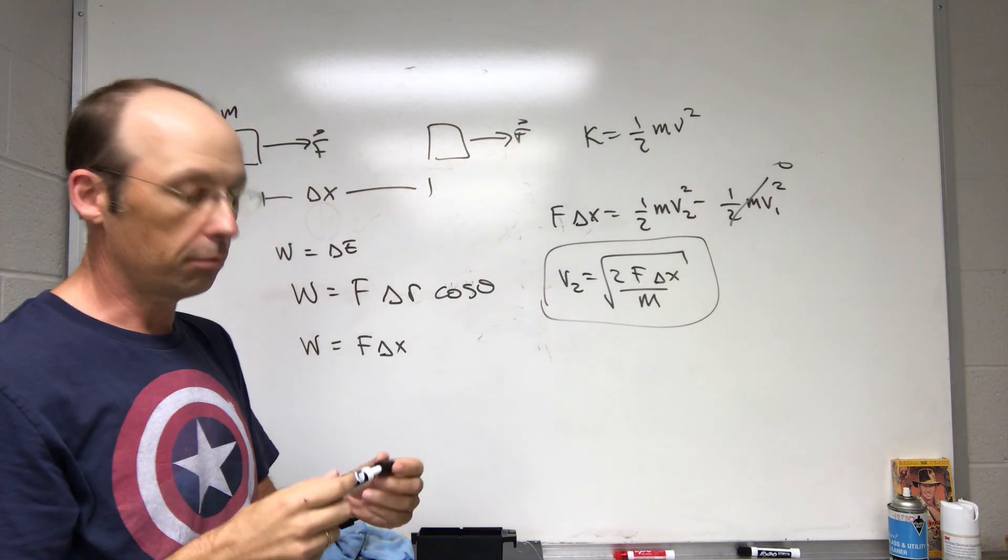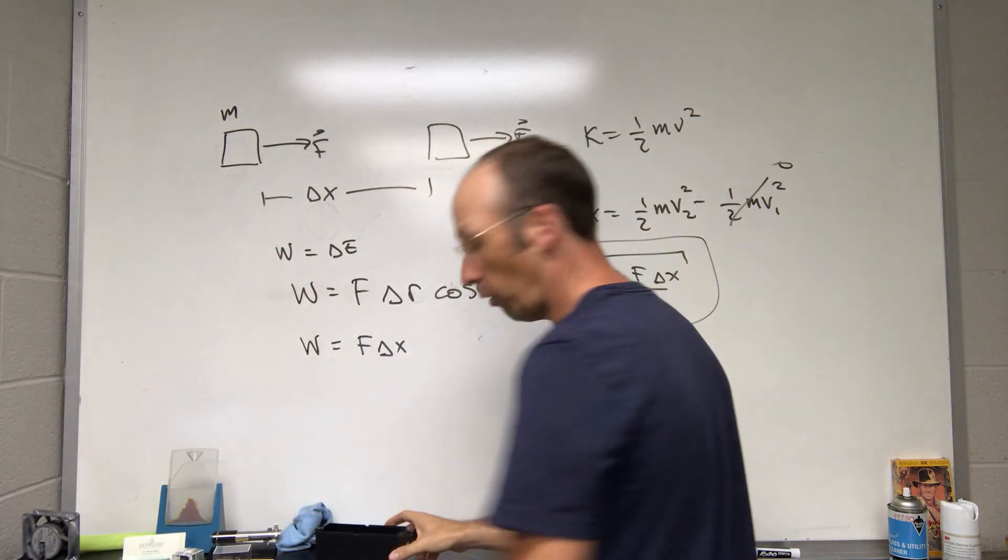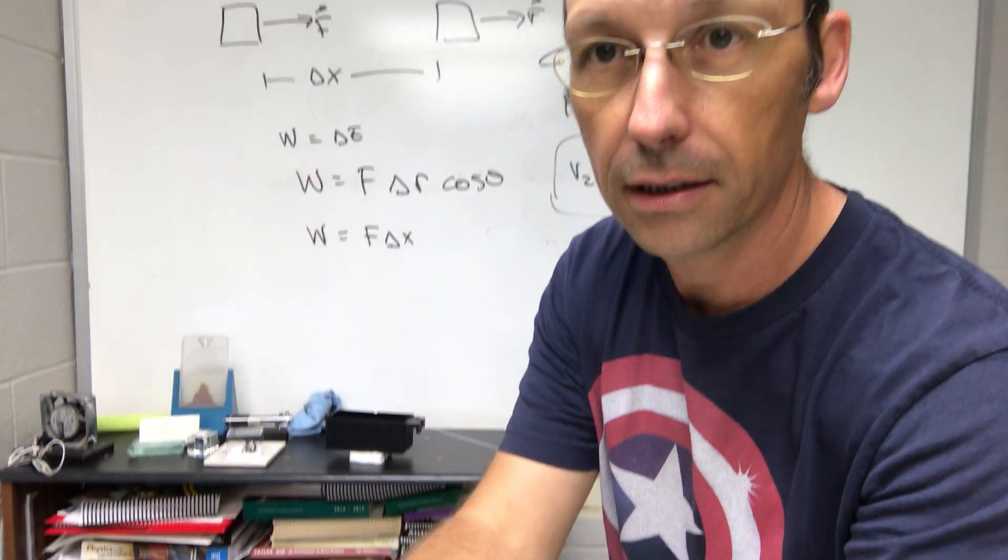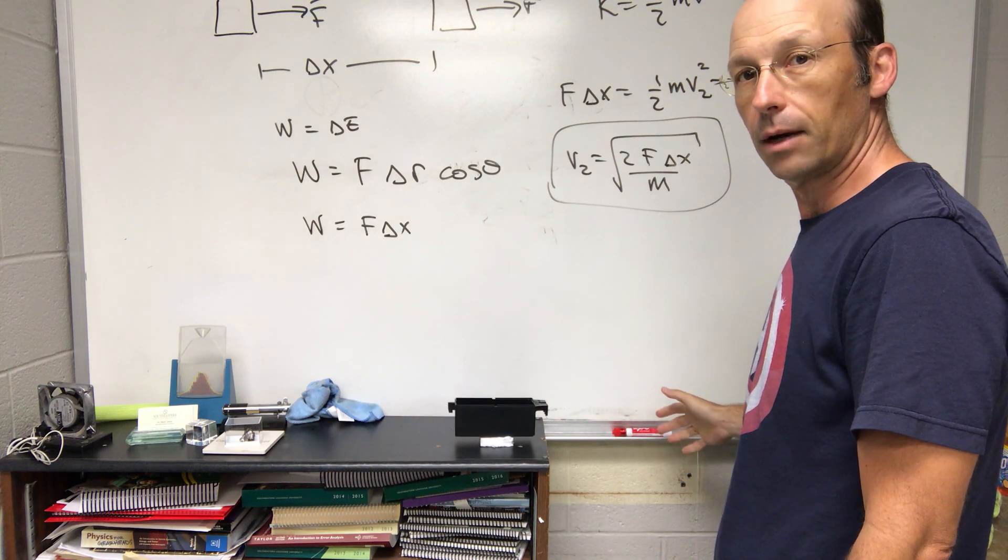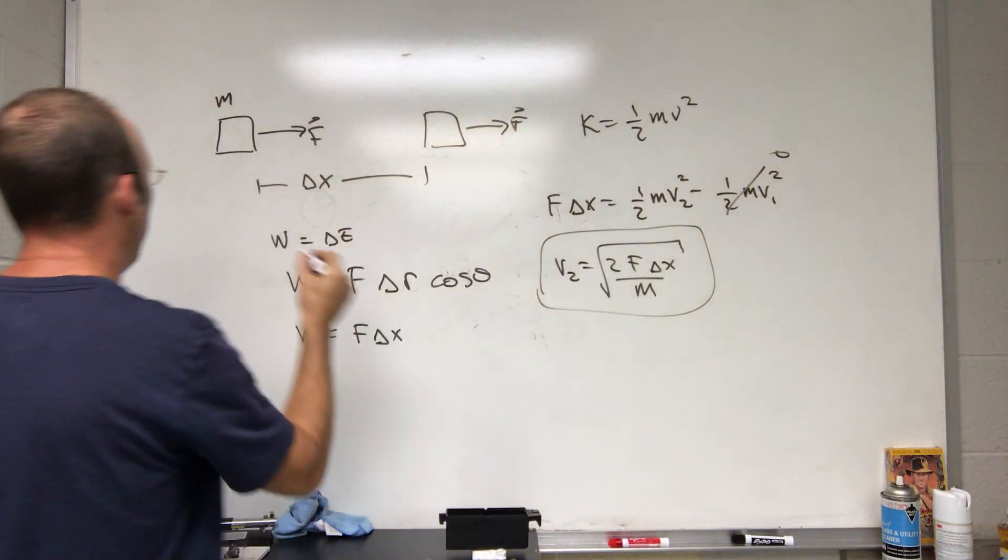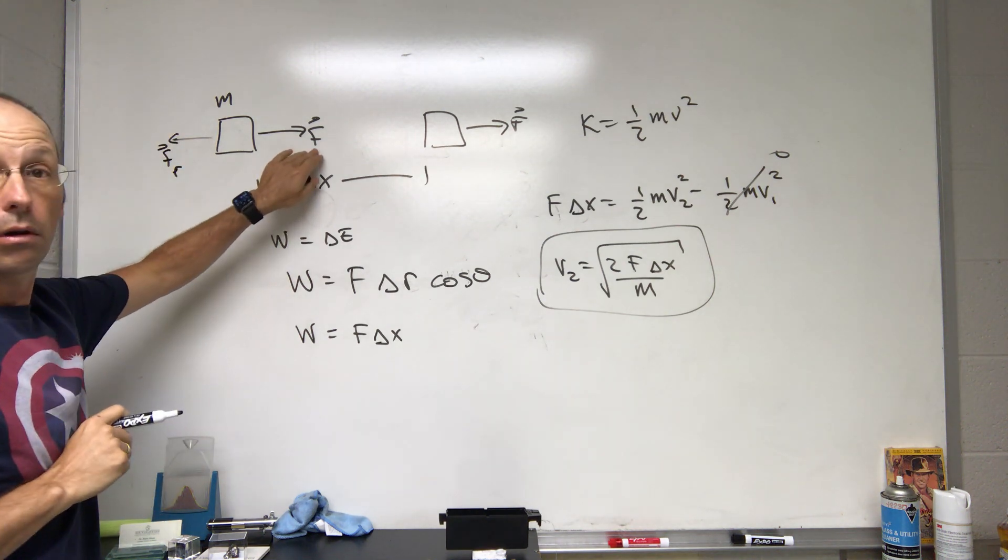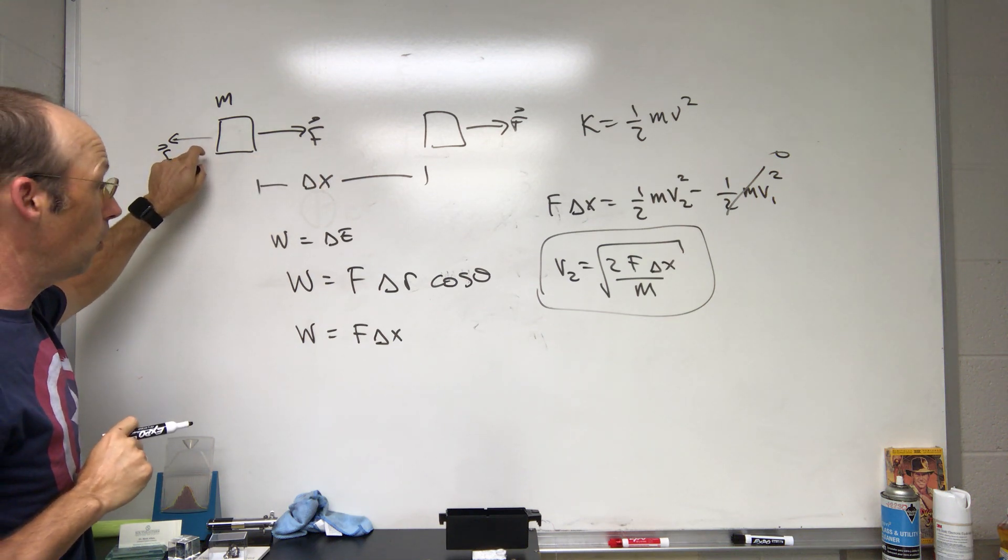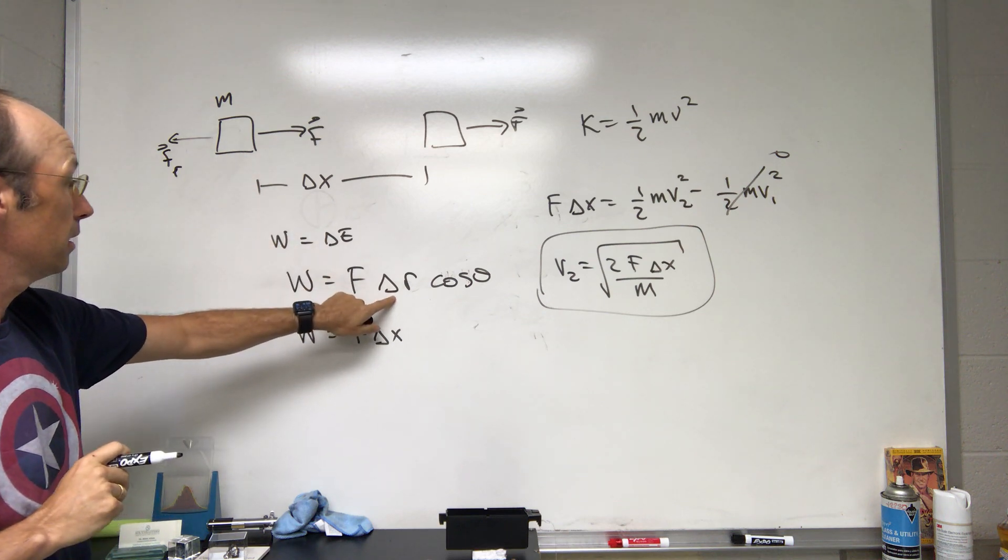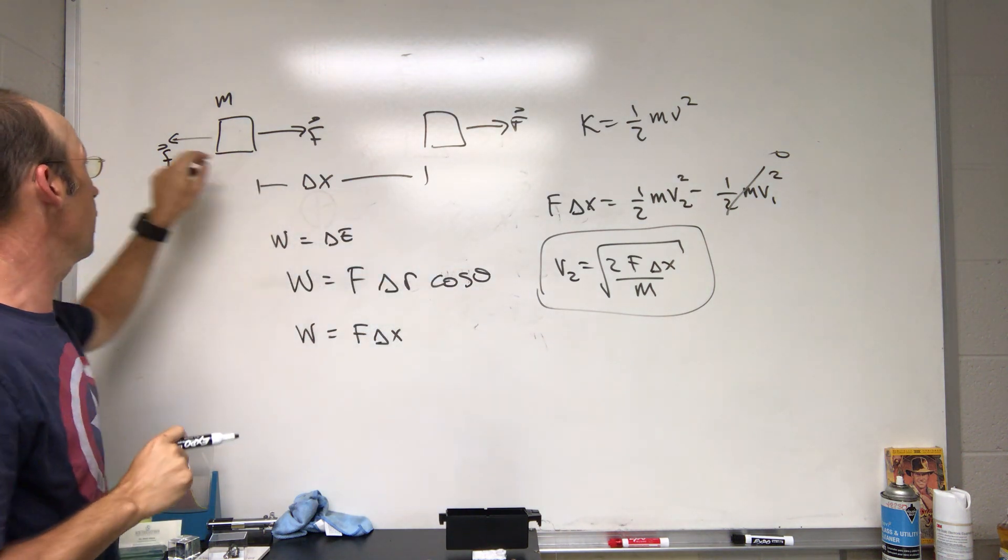Now for the problem, going back to this. I'm going to pull my block and calculate the work. In that case, I now have a force there and I have a force of friction pulling back. If this is the same force, the only difference is it goes the same distance, but theta is 180 degrees, so the work done by this force would be zero.